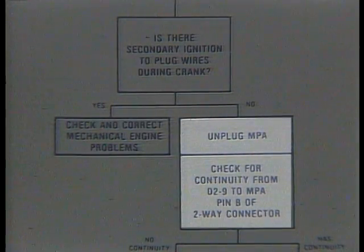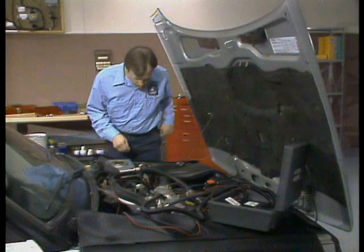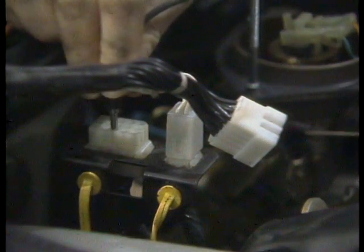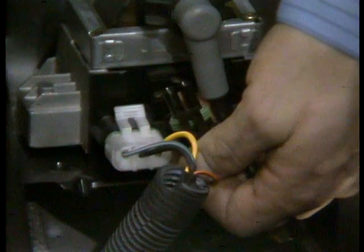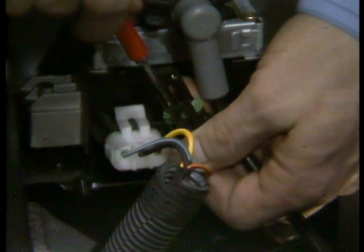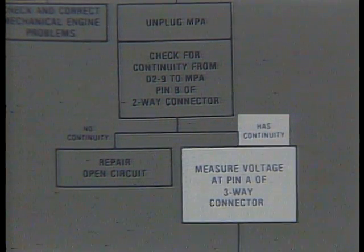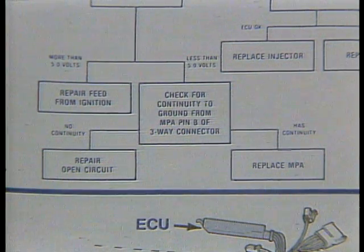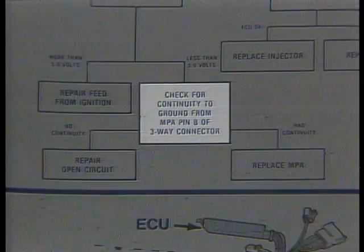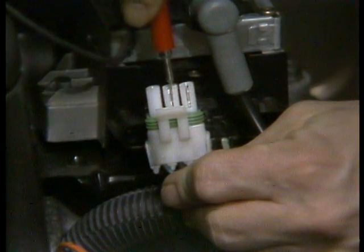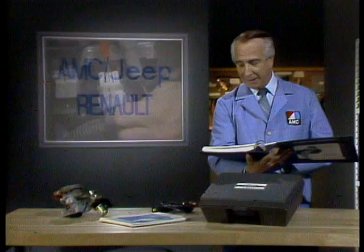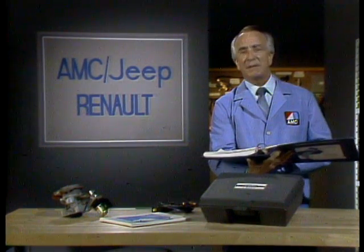First, we unplugged the MPA, or ignition module, and checked for continuity between diagnostic connector pin D29 and pin B on the two-way connector of the MPA. There was continuity. Next, we checked the voltage at pin A of the three-way connector — less than five volts. According to the diagnostic tree, there were only a few more possibilities. A final continuity check showed continuity between ground and MPA pin B of the three-way connector. We ended up replacing the MPA — troubleshooting step five, correct the problem.